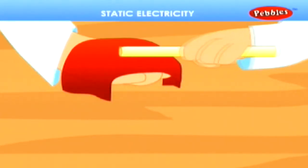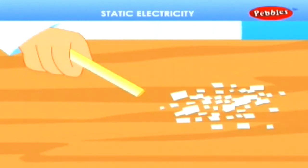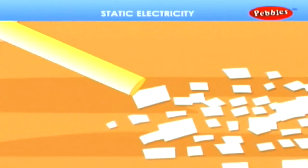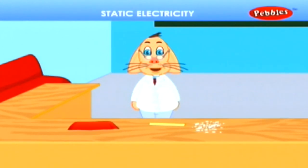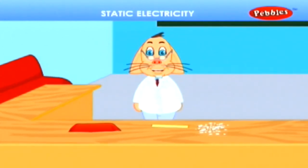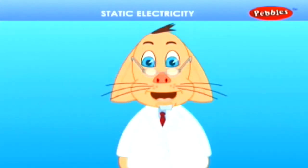Now, rub this plastic rod with wool briskly and bring it again near the same pieces of paper. This time, the pieces of paper stick to the rod. This happens because the rod gets electrically charged due to rubbing. When you rub a plastic rod with wool, it starts attracting small objects like paper pieces, etc. This is called static electricity.